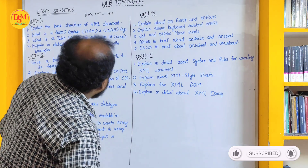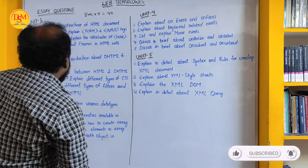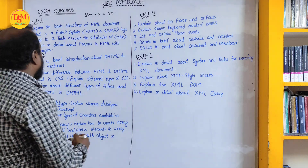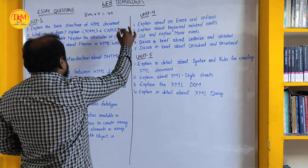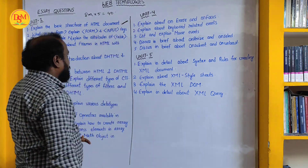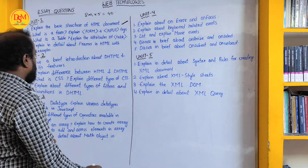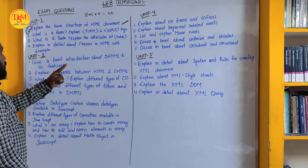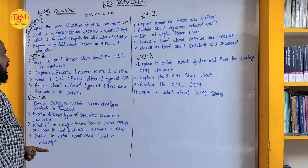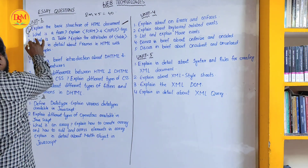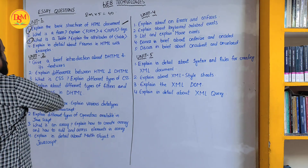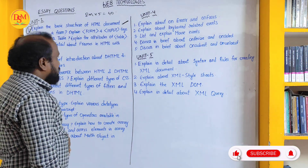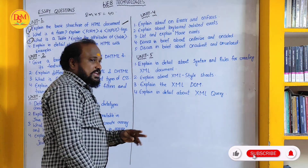Let's begin with Unit 1. The first important question is: explain the basic structure of an HTML document — you can definitely expect this in the examination. The second important question is: what is a table? Explain the attributes of a table. This question is very important. If you learn these two questions, it's enough.